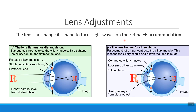Step number one is regulating the amount of light that gets into the eyeball. Step number two is regulating how that light is focused onto the retina. To help our light waves get to the retina, we're going to change the shape of the lens inside the eyeball. Changing the shape of the lens is called accommodation. When looking at something far away compared to something up close, we have to change the shape of our lens.